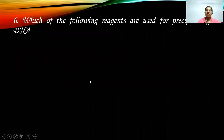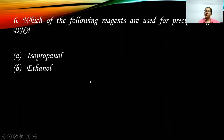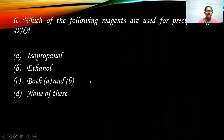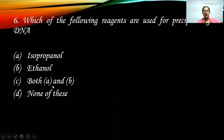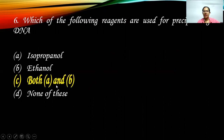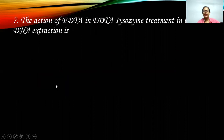Next: which reagent is used for precipitating DNA? Either isopropanol or 70% chilled ethanol can be used. The answer is both A and B — this is very simple and easy to remember.